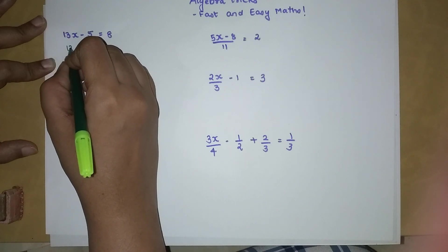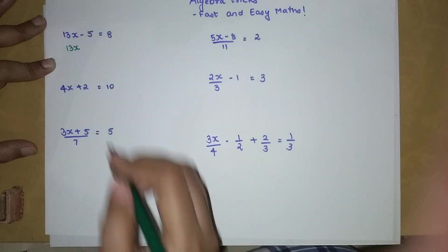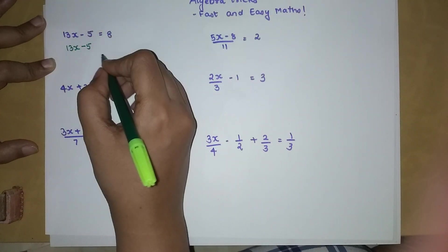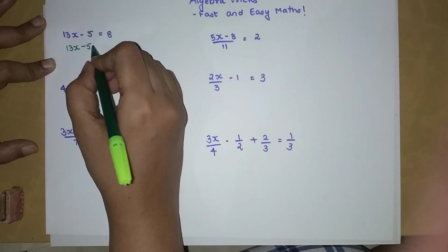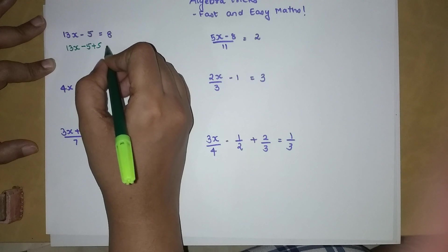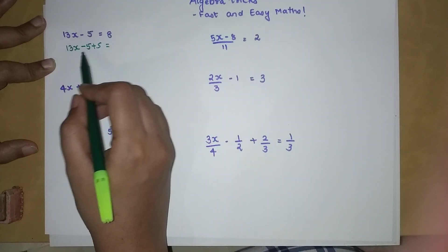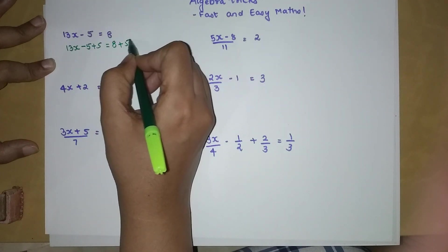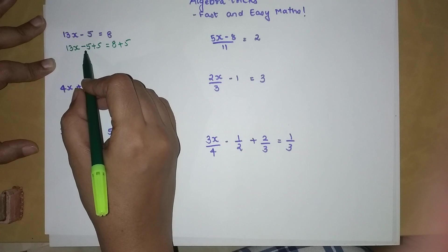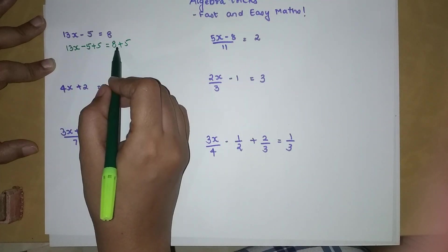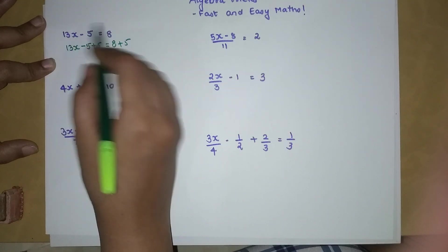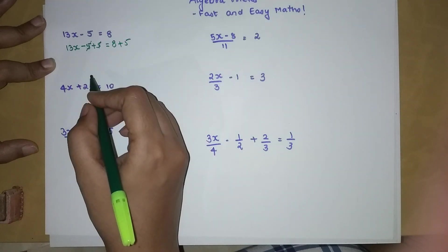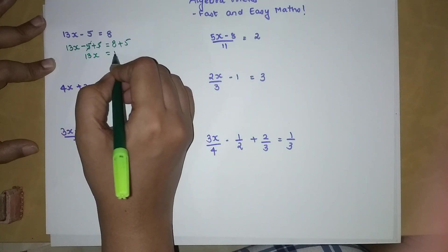We will not shift 13 — we keep it as it is — but we have to shift this number to the other side. We want to make the 5 equal to zero. Since we have minus 5, adding 5 here makes it zero. In order to maintain equality, we add 5 to both sides, so this and this will cancel, leaving us with 13X is equal to 13.